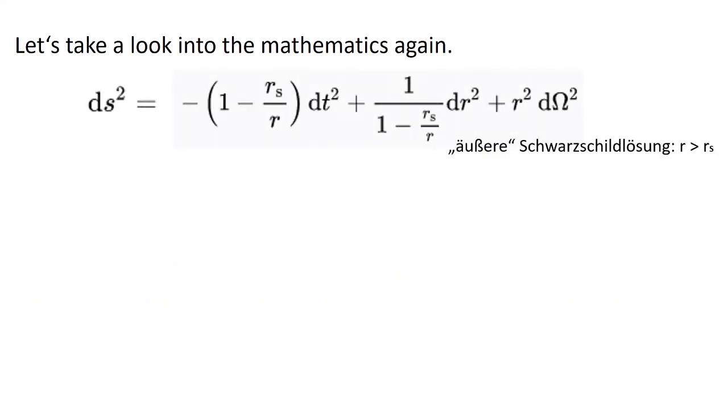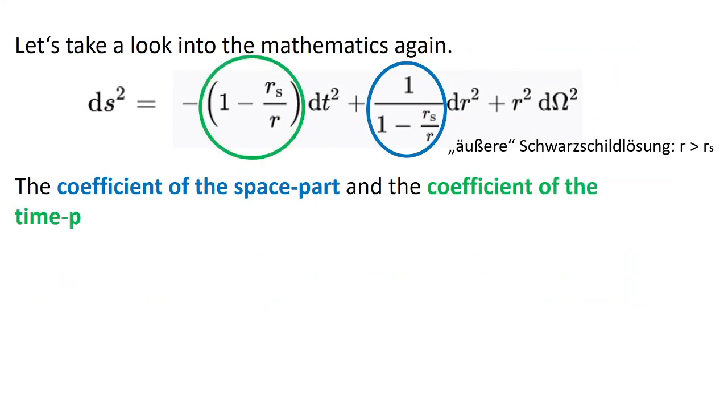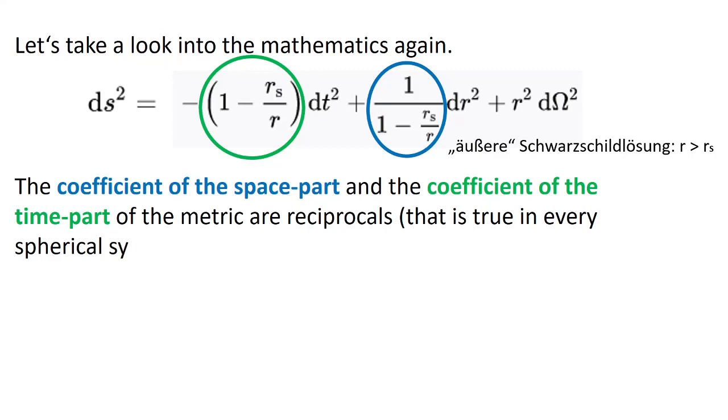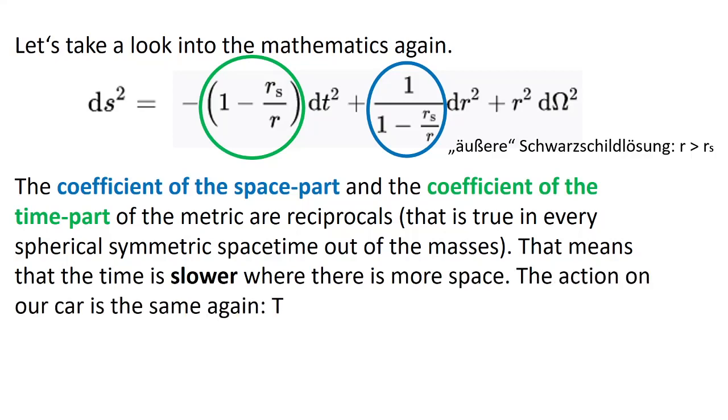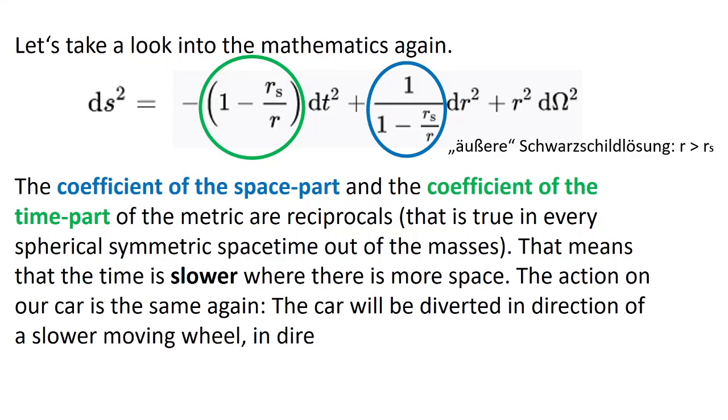Let's take a look into the mathematics again. The coefficient of the space part and the coefficient of the time part of the metric are reciprocals. That is true in every spherical symmetric spacetime out of the masses. That means that the time is slower where there is more space. The action on our car is the same again. The car will be diverted in direction of a slower moving wheel in direction to the center of mass.